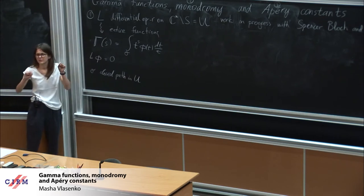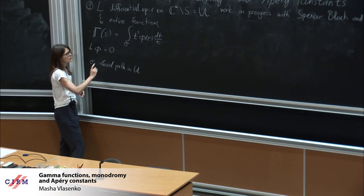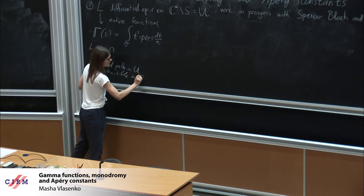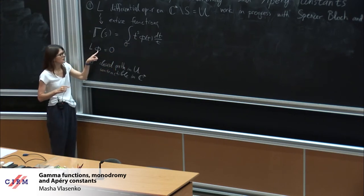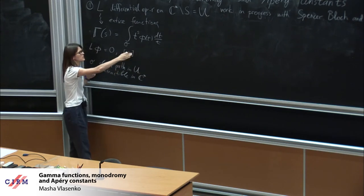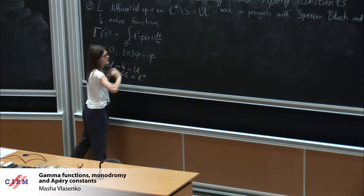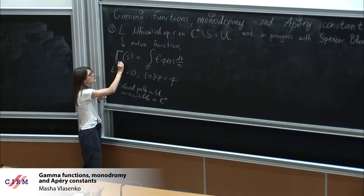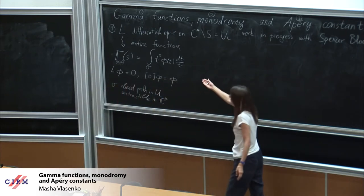Here phi is a solution to L and sigma is a closed oriented path in U. For this integral to be well defined, we assume that sigma is contractible in C*, which makes the monodromy of t to the s trivial along sigma, and we also assume that phi has trivial monodromy along sigma. I will denote the monodromy action of the path by brackets, so sigma phi equals phi. Then the integral is well defined and gives an entire function of s depending on the path and the solution. This is what we will call gamma functions.